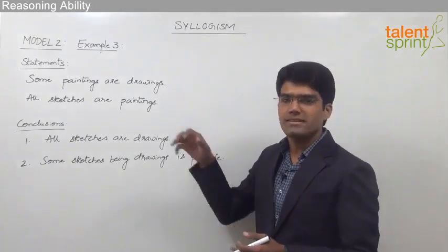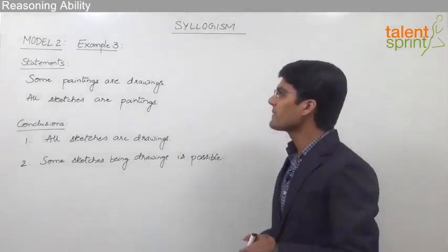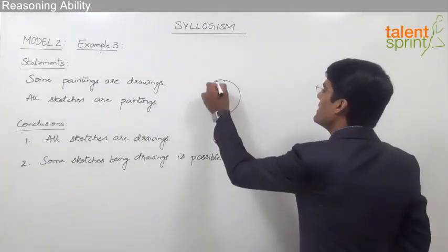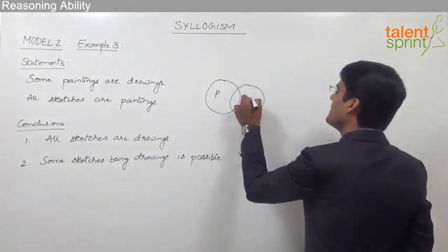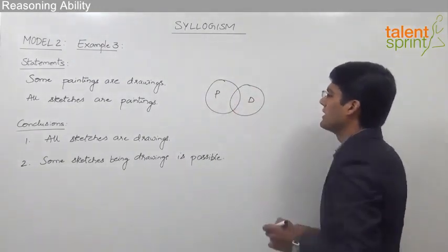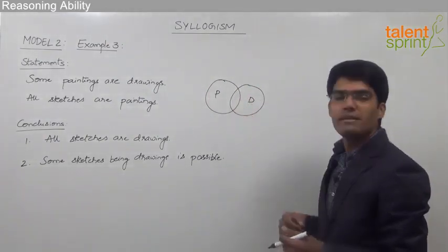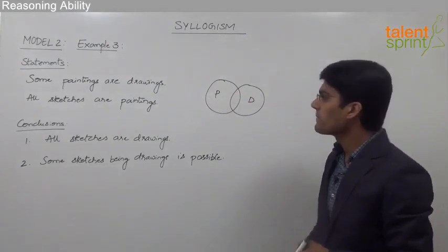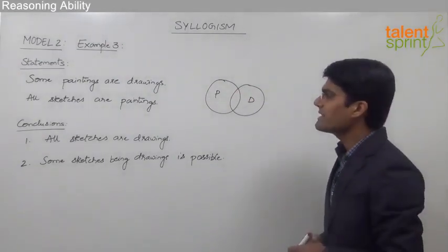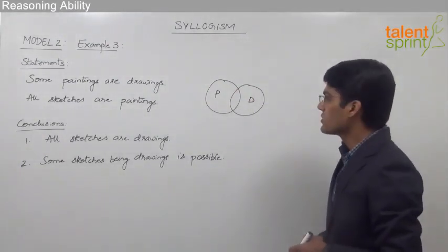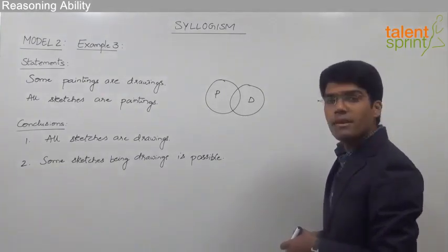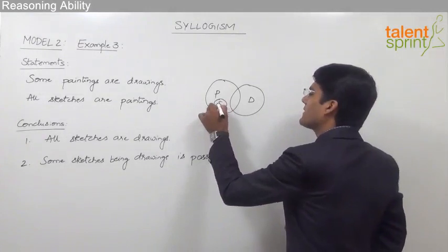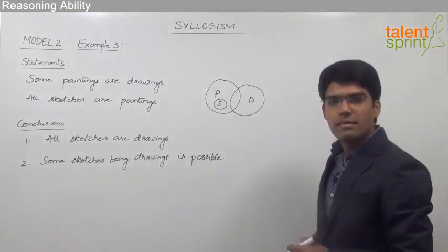Let us now draw the basic diagram for the given statements. The first statement is 'some paintings are drawings,' shown as an overlapping between paintings and drawings, indicating the paintings which are also drawings. The second statement is 'all sketches are paintings,' so sketches are placed entirely inside paintings.